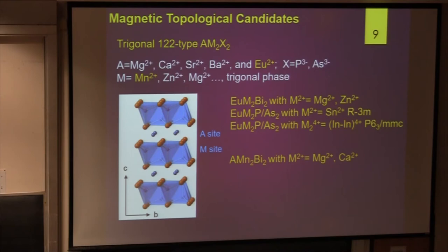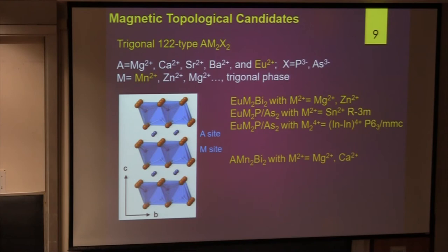Beyond charge balance, why do we choose magnesium, calcium, strontium, barium, europium? Professor Julia Chen did a lot of work on europium and zintl phases. Europium has a similar size as strontium 2+, so we like to replace strontium using europium to give magnetization. Another consideration is we want to keep the C3 rotation in the structure. We need special structure protection — C3 is not the only option, but it usually gives very good structure protection. The rhombohedral or trigonal structure always gives C3, with a higher success rate for finding topological materials.